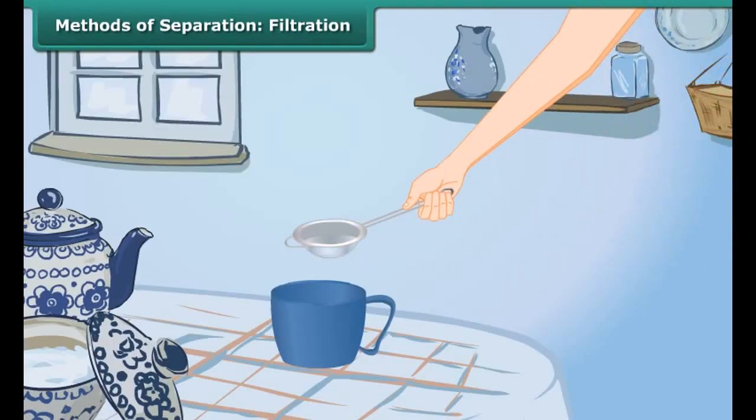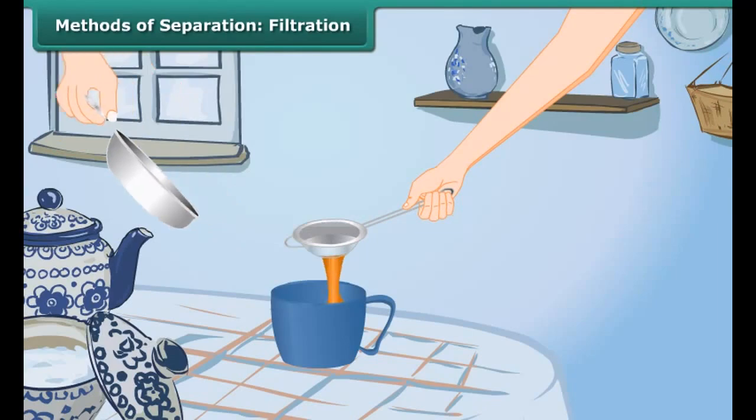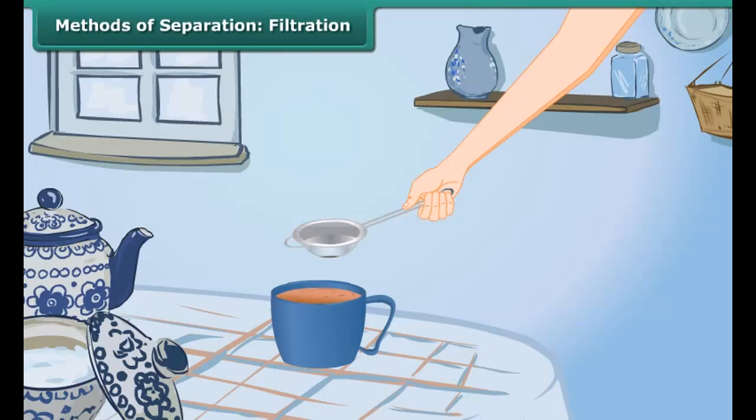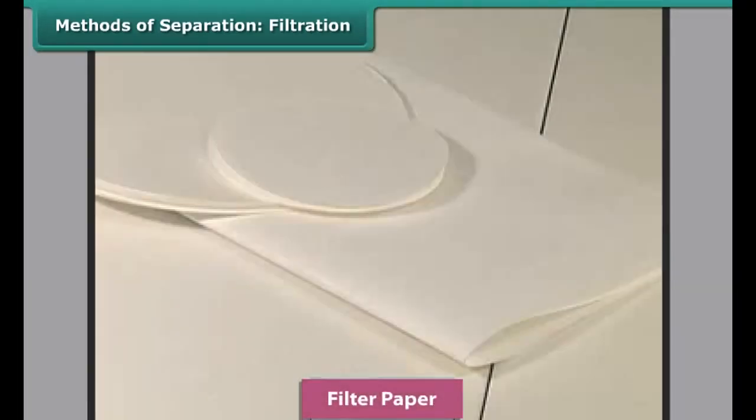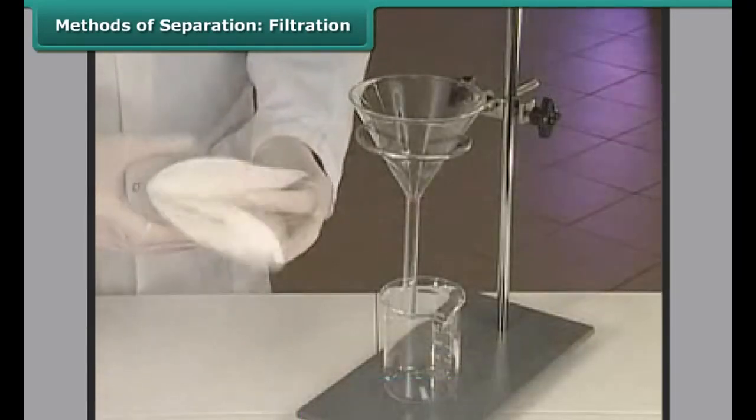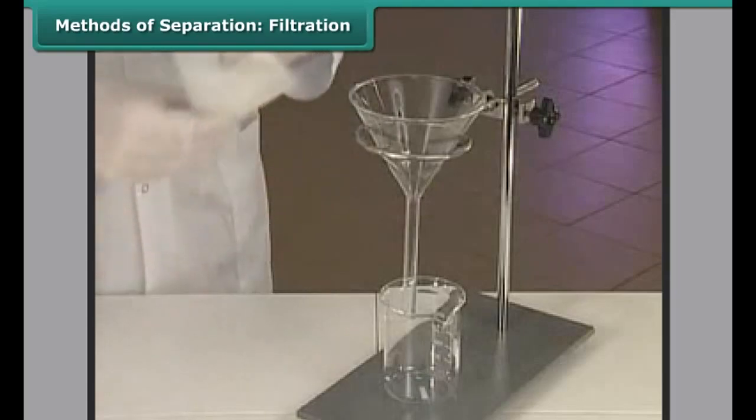After preparing tea, this tea stall owner pours the mixture into the tea strainer. The tea passes through the holes of tea strainer, leaving behind the tea leaves in it. This process of separation is known as filtration.